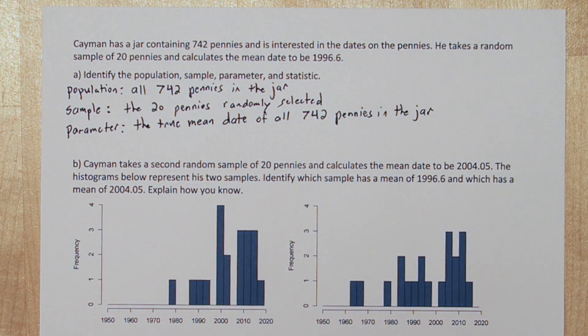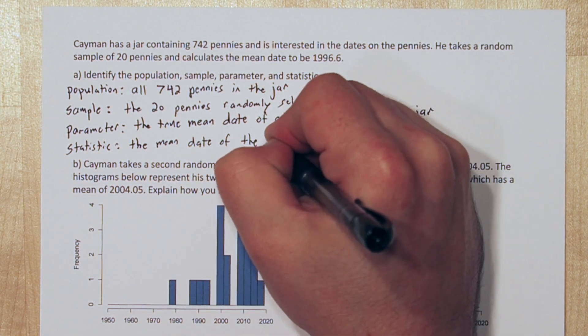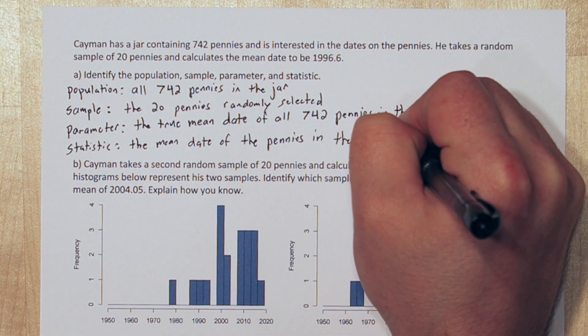The statistic is the mean date of the pennies in the sample, and its value is X bar, which is 1996.6.